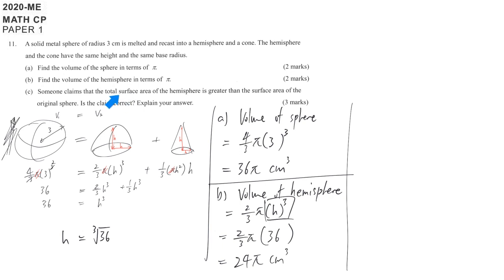Part C is asking about the total surface area of hemisphere compared with the surface area of the original sphere. So we just calculate one by one. Let's talk about the sphere first. Don't be too lazy. Write down what you are calculating for clear presentation and ensure that you don't get lost. So this is 4 pi r squared. For the sphere, the r is 3. So 4 pi 3 squared, then we get 36 pi cm squared.